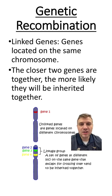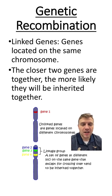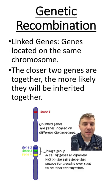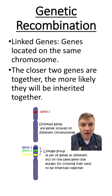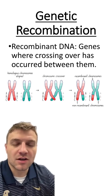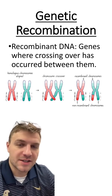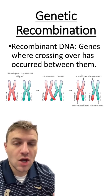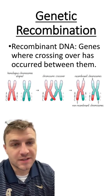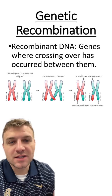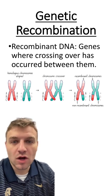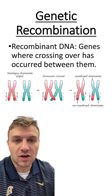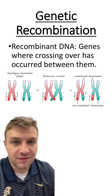These linked genes are going to be inherited together more often than not because they're closer together on the same chromosome. That's because the likelihood of crossing over occurring between these linked genes is very low. When crossing over does occur between chromatids of non-sister chromatids, we call that recombinant DNA, because the genes have crossed over or flip-flopped from non-sister chromatids and are genetically different.